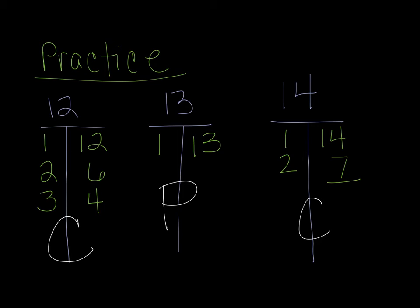So again, prime numbers only have two factors, one of them including the number 1. Composite numbers have more than two factors.